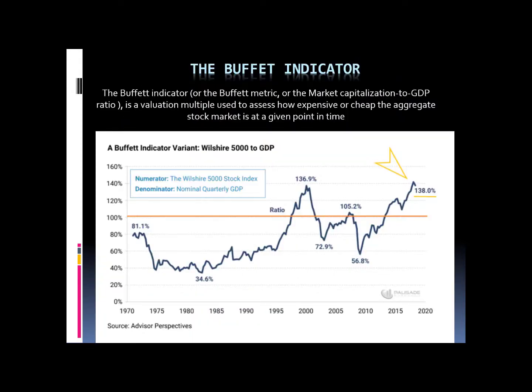Let's first understand what it is. The Buffett indicator, or the Buffett metric, or the market capitalization to GDP ratio, is a valuation used to assess how expensive or cheap the aggregate stock market is at any given point in time.